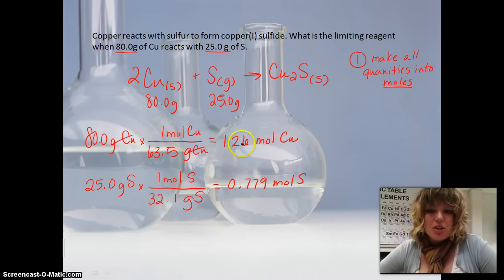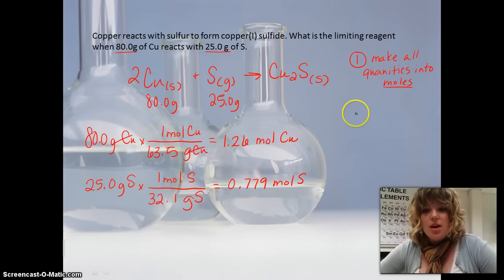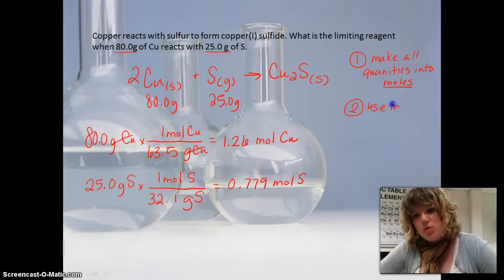Now, a lot of times people would look at these and say, sulfur must be the limiting reactant because it's the least amount. We don't know that because we haven't used our balanced chemical equation yet. There's two coppers up here, and we haven't incorporated that two in here at all. So what we really need to do now is use our mole ratios. Use mole ratios to compare.